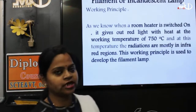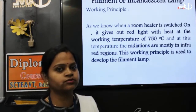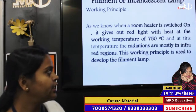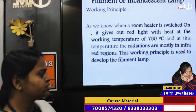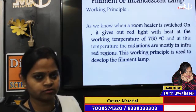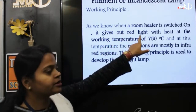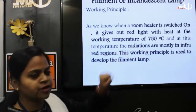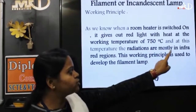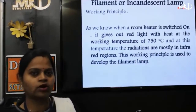Now the first lamp: the filament lamp, also called the incandescent lamp — the bulb we are using in our home. The technique used here is converting heat energy into light energy. Like when we use a room heater, when it is switched on it gives a red light with heat at a working temperature of around 750 degrees centigrade, and at that temperature the radiation is mostly in the infrared region. This working principle is used in the filament or incandescent lamp.